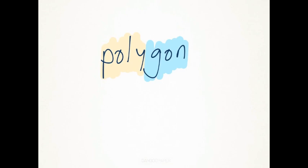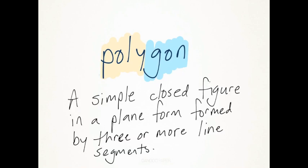Big surprise, polygon is derived from two stems. When taken together, polygon literally means mini-angle. However, your textbook's not going to define it this way. This is how your textbook is going to define it.